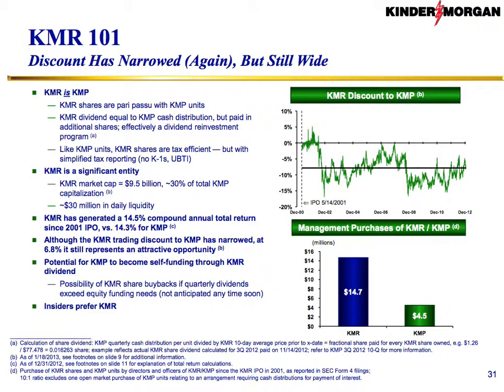That gives us access to a much deeper pool of capital. It also gives us this ancillary benefit whereby we are effectively automatically issuing equity every quarter.